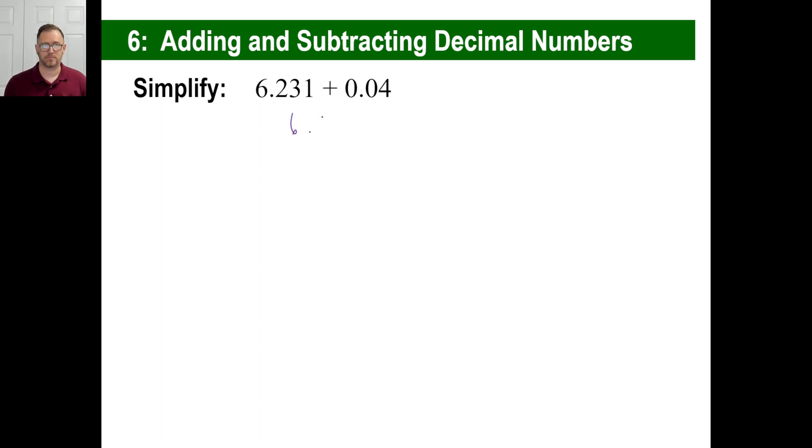6.23 times, or excuse me, plus 0.044. In other words, you add up the decimals, right? And you don't go on the rug. That's your smart pet, though. Never mind. Just make sure you line up the decimals and so on. That's easy to do that.